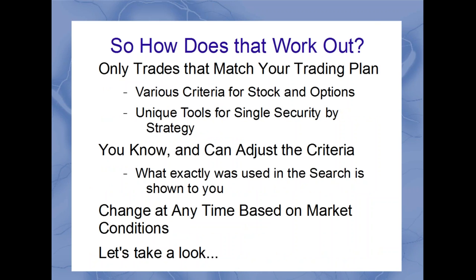When you create a search in PowerOptions, or go right into our default searches, you know you're seeing only the trades that match your trading plan. You know exactly why certain stocks appeared in the list because it's shown to you — why a particular strike appeared and another didn't, because it doesn't have the return, liquidity, option volume, or open interest you were looking for. You can see and adjust the criteria at any time based on market conditions. Let's jump into the PowerOptions suite of tools.